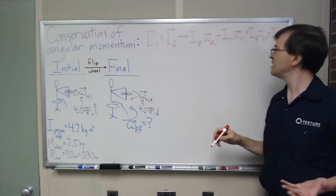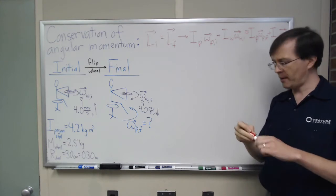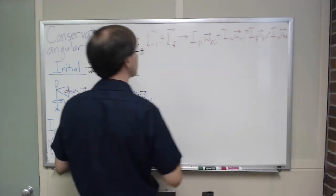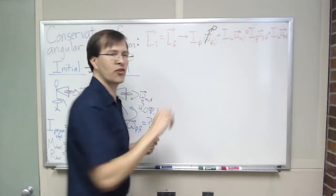I'm going to have I person omega person final plus I wheel omega wheel final. That's my equation. And in all this, I can simplify my life right away by pointing out that in the initial story, omega person initial is zero. So this first term drops.